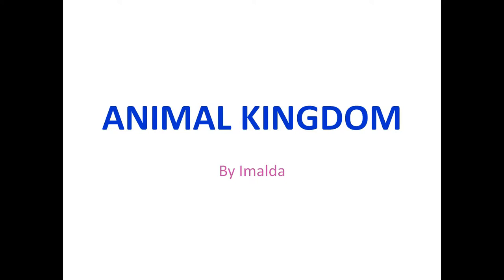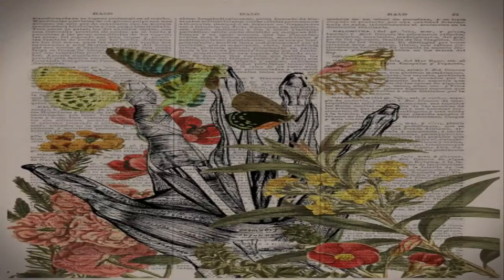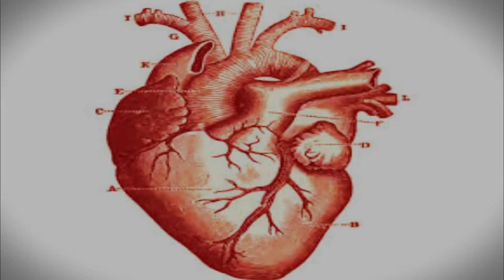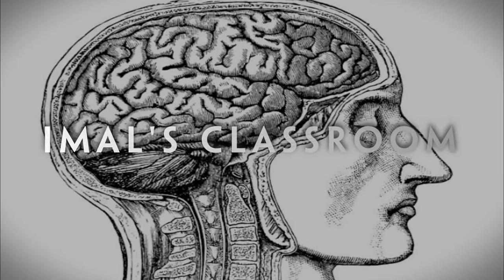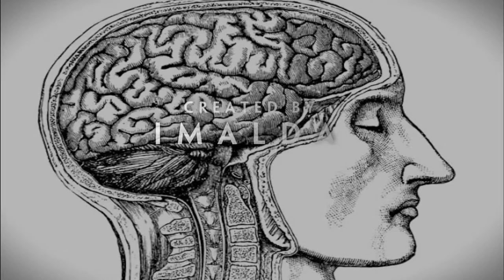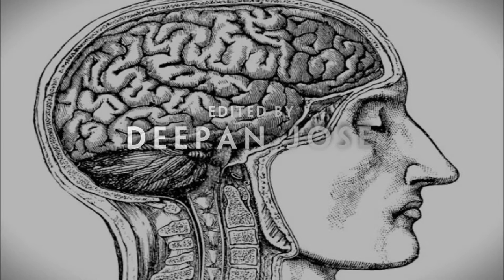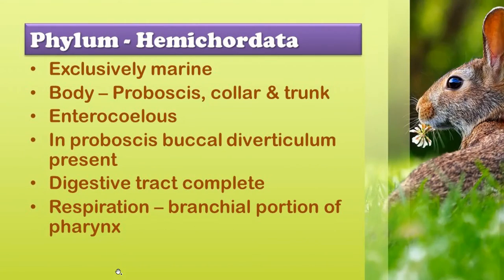Welcome students. Now we are going to learn the second part of the lesson Kingdom Animalia. In the previous segment, we have learned about the classification of Kingdom Animalia up to phylum Echinodermata. Up to phylum Echinodermata were invertebrates.